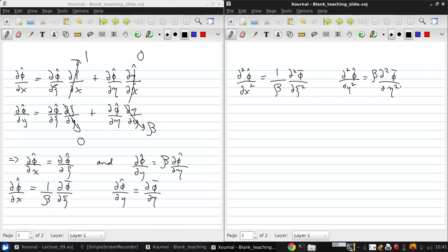Now, we want to go ahead and put these definitions, which are now in terms of our new potential and the new coordinates, into the original equation, which was, again, beta squared d squared phi hat dx squared plus d squared phi hat dy squared equals zero.